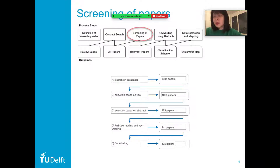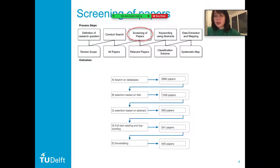We then applied selection on the title and abstract. These two steps were undertaken by two authors in parallel. After that, the first author went through the content. Then we conducted snowballing, which is browsing the reference list of each selected paper. In the end, we obtained 405 papers.